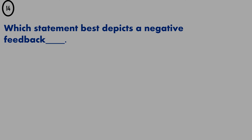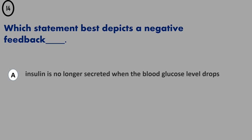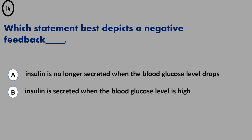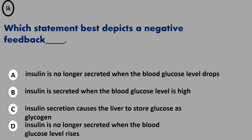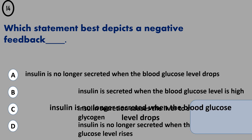Finally, Question 14. A. Insulin is no longer secreted when the blood glucose level drops. B. Insulin is secreted when the blood glucose level is high. C. Insulin secretion causes the liver to store glucose as glycogen. D. Insulin is no longer secreted when the blood glucose level rises. The correct answer is...